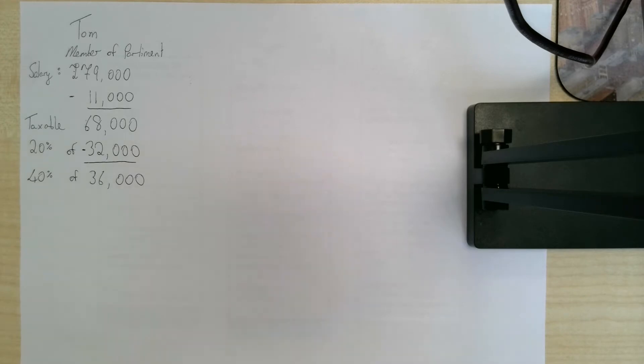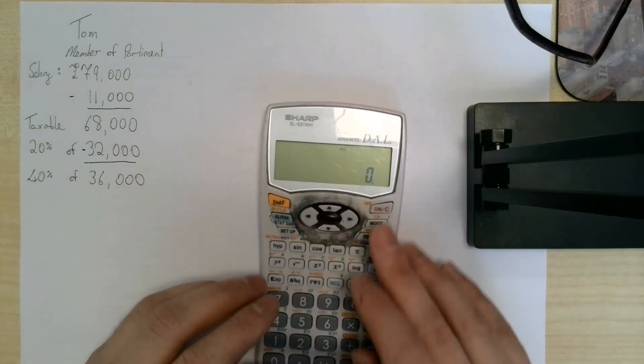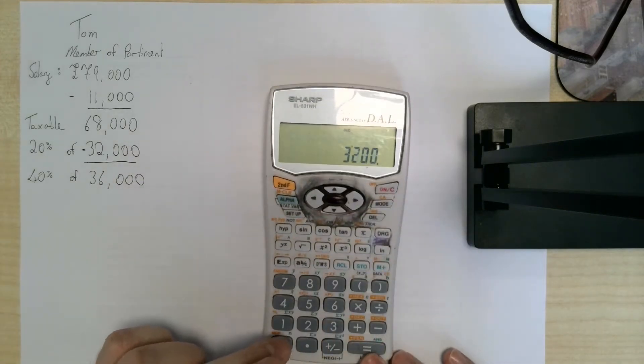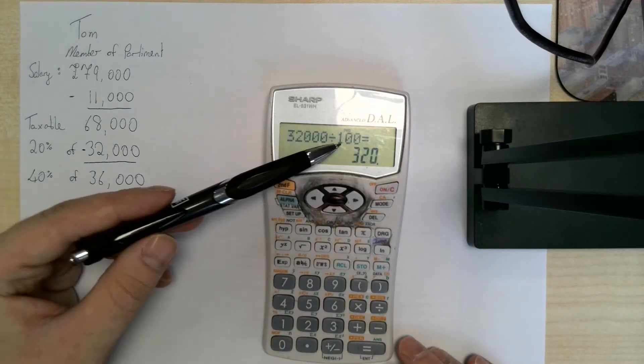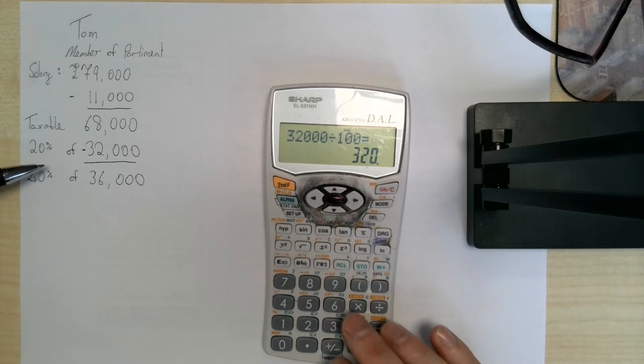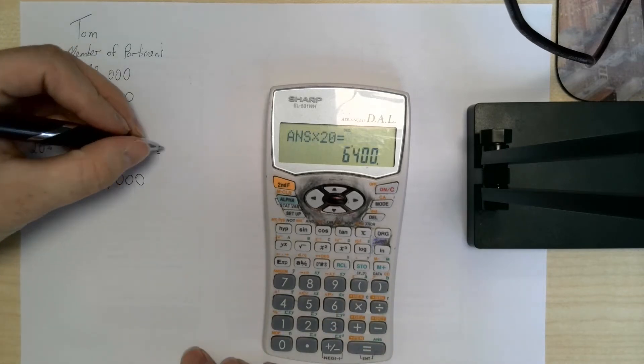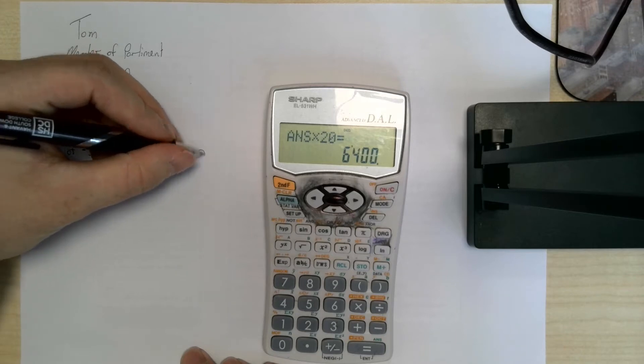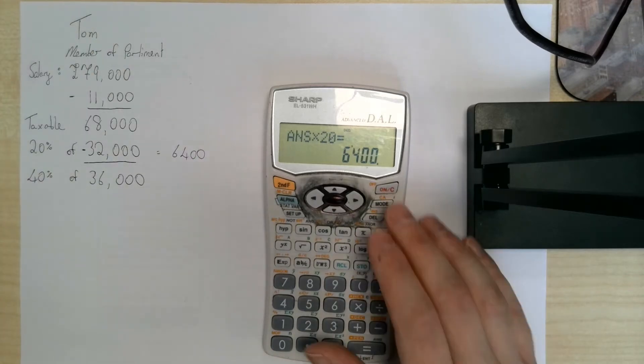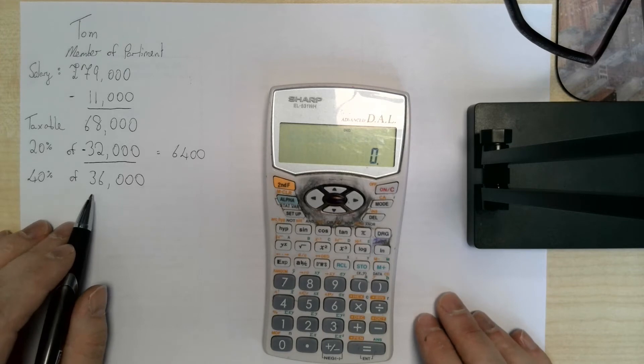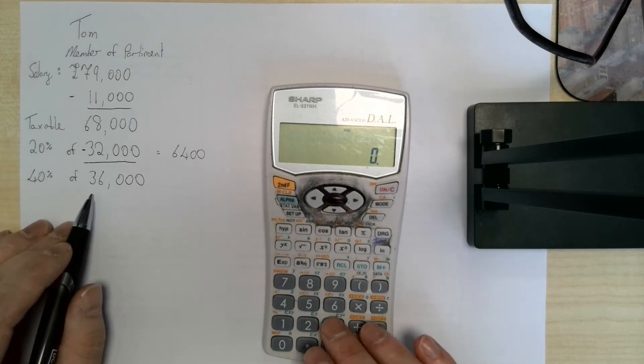20% of £32,000: we can do £32,000 divided by 100, that gives us 1%, multiplied by 20, and we've got £6,400. Doing the same with £36,000, we want to find 40% this time.